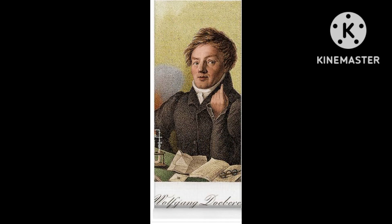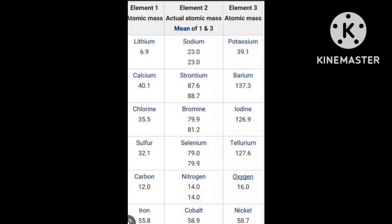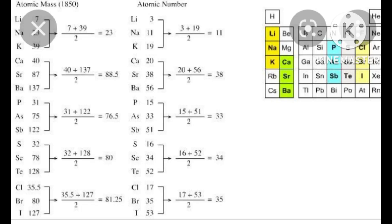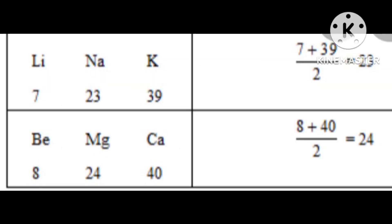Next, Döbereiner's Triads — he thought to arrange the elements by placing 3 elements in a group. These three elements show similar properties, and because of this grouping of three, he called them triads. He placed the elements in order based on atomic mass.